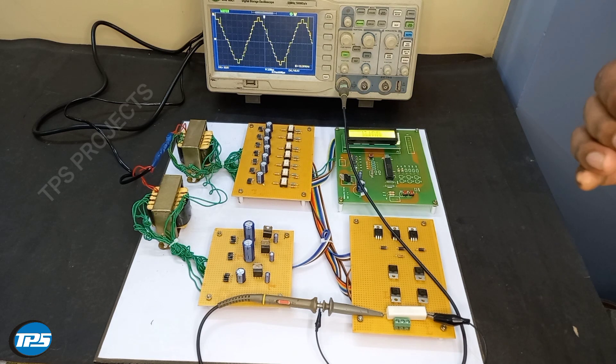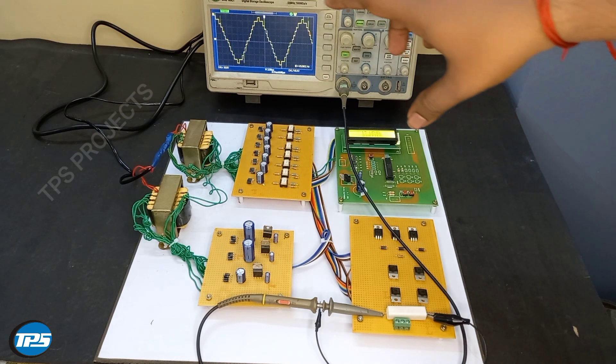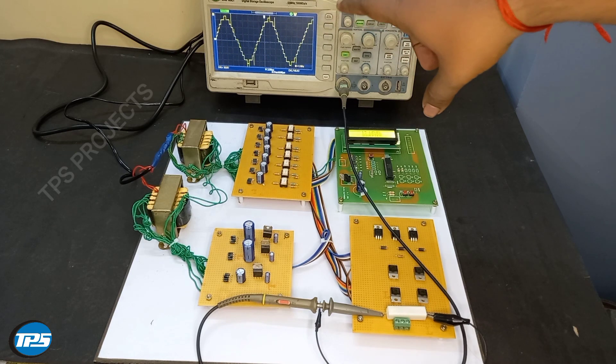The pulses are sent to the MOSFET circuit and according to the pulses the MOSFETs turn on and off. According to the MOSFET switching setup we get the 13 level output you can see in the DSO.